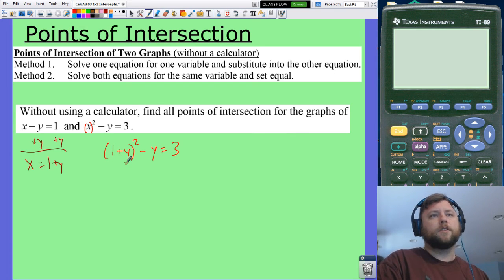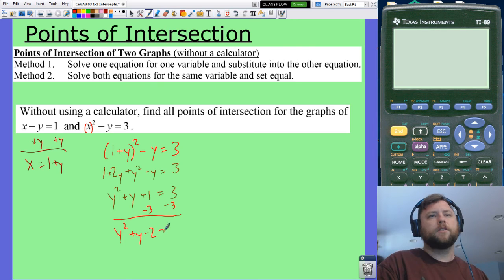That expands to (1 plus y) times (1 plus y). That's going to be 1 plus 2y plus y squared minus y equals 3. Combining those y's, this is y squared plus y plus 1 equals 3. When you have a quadratic equation here, I want to move everything to one side. I will subtract 3 on both sides, so I get y squared plus y minus 2 equals 0.